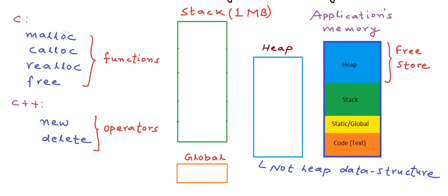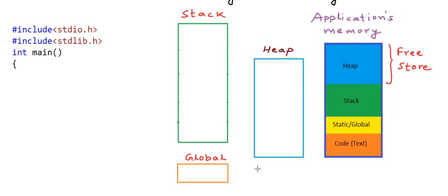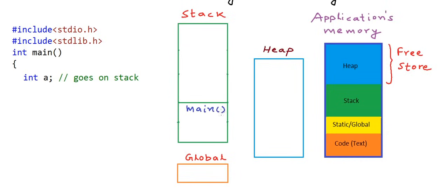Let us first look at a code example in C. If we declare a variable like this, then this variable is a local variable — it goes on the stack. Memory for this particular variable A will be allocated from the stack frame of the main method. Let's say we want to store an integer on the heap.